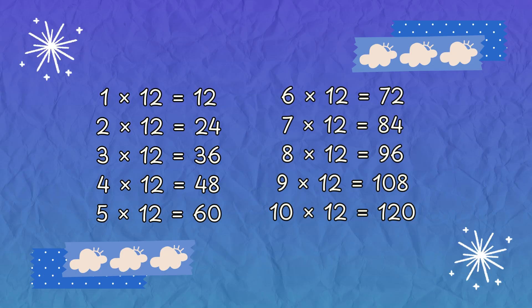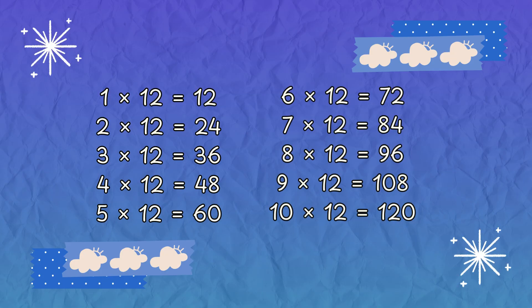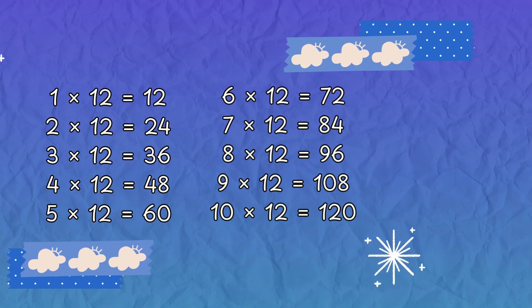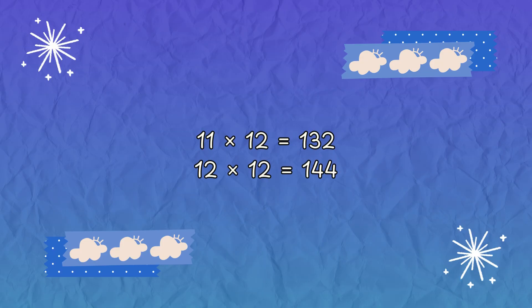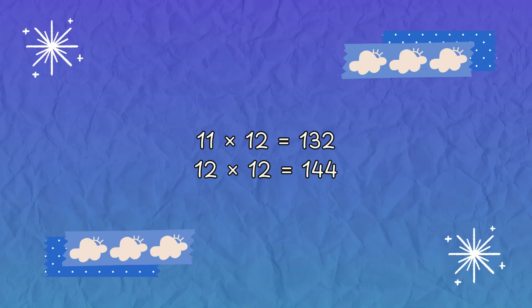Nine times twelve is one-hundred-and-eight, ten times twelve is one-hundred-and-twenty, eleven times twelve is one-hundred-and-thirty-two, twelve times twelve is one-hundred-and-forty-four.